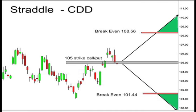Here's a chart of the CDD. What we would be looking at is buying both a 105 strike call and a 105 strike put. The pair value was essentially trading within this range at the time that these prices were looked at. You can see that our break-even points on this particular transaction appear as though they're quite a ways away.